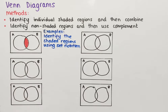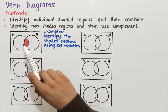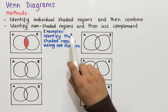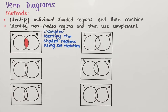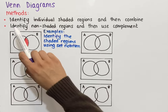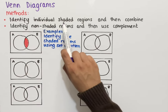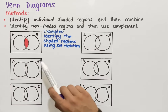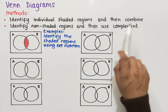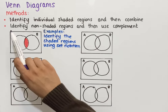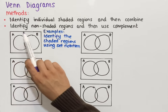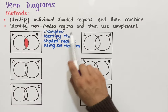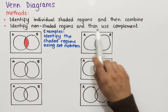Let's look at Venn diagrams and in particular identifying different shaded regions within a Venn diagram. The two methods we're going to use are: either identifying individual shaded regions and then combining them, or identifying non-shaded regions and then using complement.